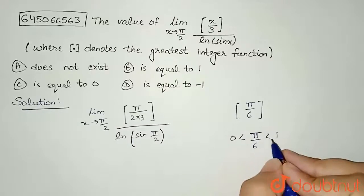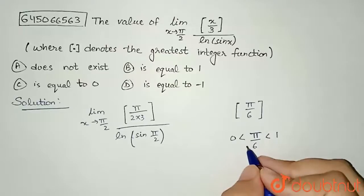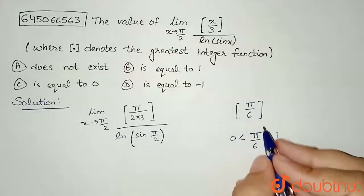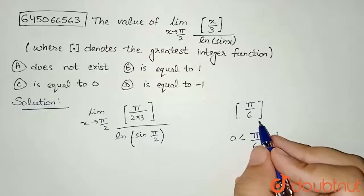Or 3.14. So this will be less than 1 and greater than 0. So in this case, the integer part function is 0.